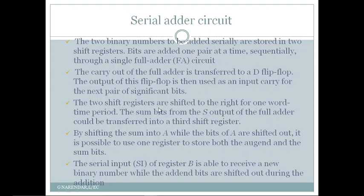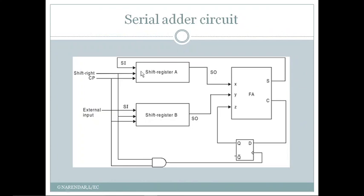The two shift registers are shifted to the right for one word period. With each clock pulse, the bits are shifted towards right and the serial output provides the bits required for addition. The same clock pulse causes the previous carry stored in the D flip-flop to be taken as the third bit. The full adder adds these three bits and produces sum and carry. With each clock pulse, the carry bit gets stored in the D flip-flop.